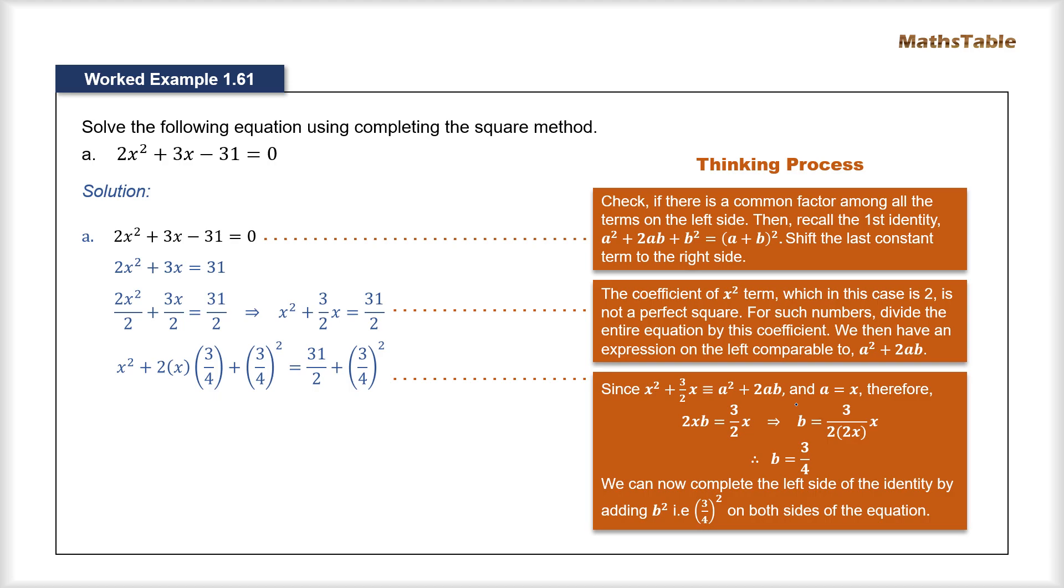So in this next second term we can compare this 3/2x with the second term of the identity 2ab. Now we can see that the second term of the identity 2ab is comprised of three things: one is the number 2, the second is the first number a, and third the number b. So what we need to do is now we need to compare this 2ab with the second term of the expression 3/2x.